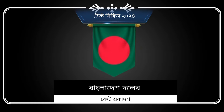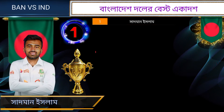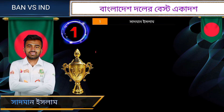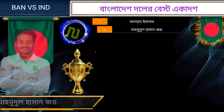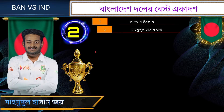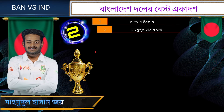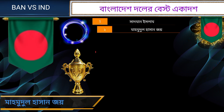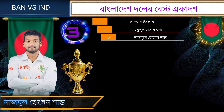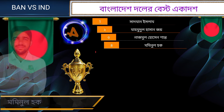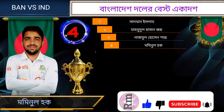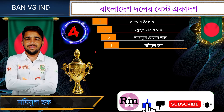Bangladesh Playing XI: Number 1, Sadman Islam, opening batsman. Number 2, Mahamudullah Sanjoy, opening batsman. Number 3, Nazmul Sanshanto, middle-order batsman and captain. Number 4, Mumminul Haq, middle order batsman.